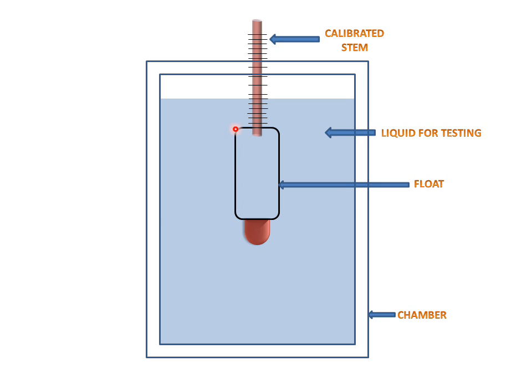This is the float which helps the scale of the system float. And this is the weight for maintaining the upright direction of the scale and balancing the float and scale in the liquid.